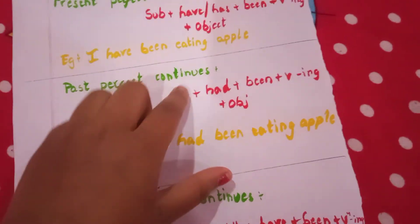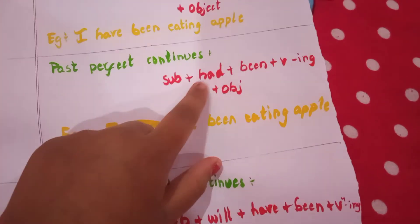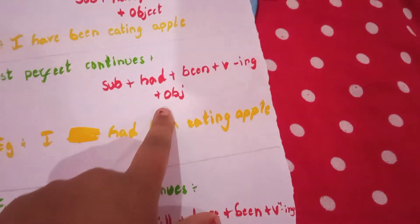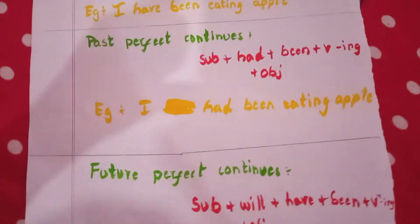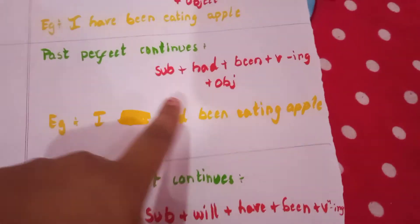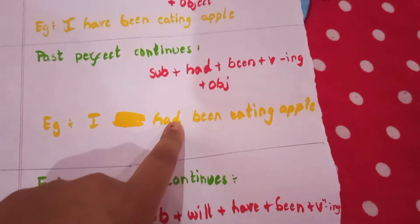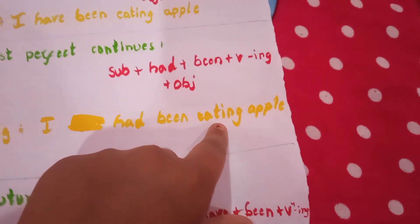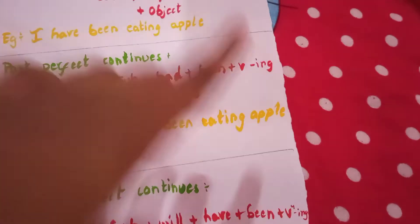Past perfect continuous: subject plus had plus been plus V4 plus object. Example: 'I had been eating apple.' 'I' is the subject, 'had been' is the auxiliary, 'eating' is V4, and 'apple' is the object.